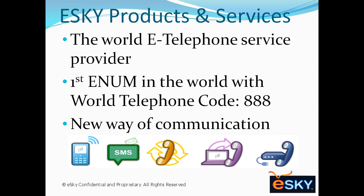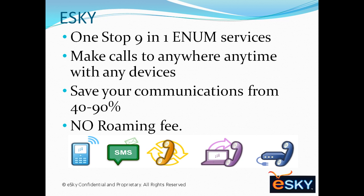eSky is the world e-telephone service provider that offers the first ENUM in the world with World Telephone Code 888. ENUM means eSky telephone number, not belonging to any country code — like the U.S. is 1, U.K. is 44, and eSky is 888. This is a new way of communication. eSky is the one-stop 9-in-1 ENUM service provider. With ENUM, you can make calls to anywhere, anytime, with any devices, and save 40 to 90% on communications with 100% no roaming fee.